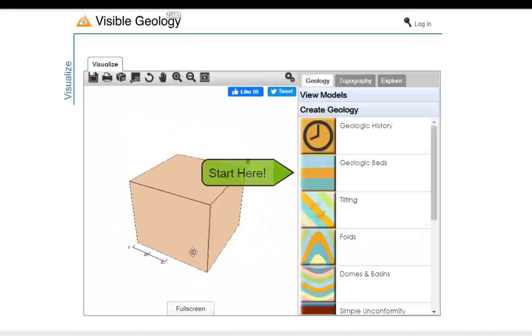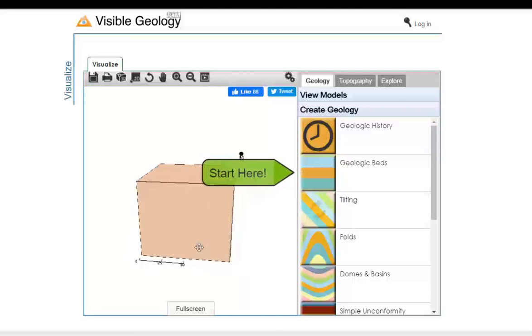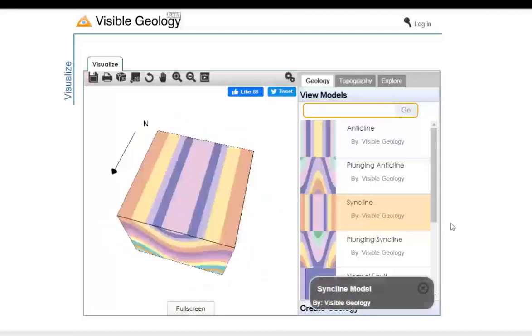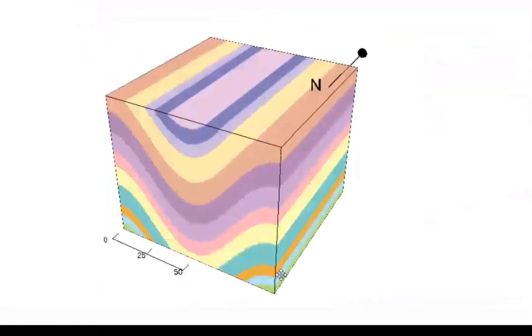And the great thing here is you can use block diagrams to understand what you're seeing in a cross-section view and what you see on a map view. So let's have a look at a block diagram of a syncline. And let's make it full screen.